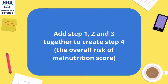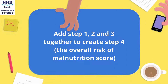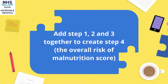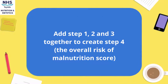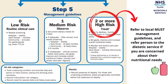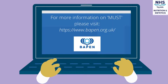Step 4 is the overall risk of malnutrition, worked out by adding steps 1, 2, and 3 together. This score will help determine the next steps. Step 5 is the MUST management guidelines. Most importantly, if someone scores 2 or more, they are at high risk of malnutrition. In this case, refer to local MUST management guidelines and refer the patient to the Nutrition and Dietetic Service if you are concerned about their nutritional needs. For more information and tools on how to calculate the MUST score, please visit BAPEN's website.